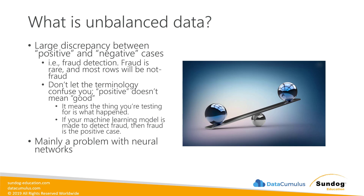It's very easy for a model to say, since fraud actually only happens like 0.01% of the time, I'm just going to predict that it's not fraud all the time. And my accuracy is awesome now. So if you have an unbalanced dataset like that, you can end up with a machine learning model that looks like it has high accuracy, but it's just guessing no every time. And that's not helpful.